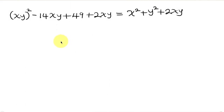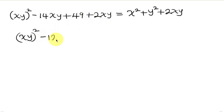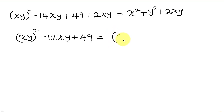Simplifying, we have (xy)² - 14xy + 2xy is -12xy, and then plus 49 equals — notice that the right-hand side is now a perfect square of the form (x + y)².